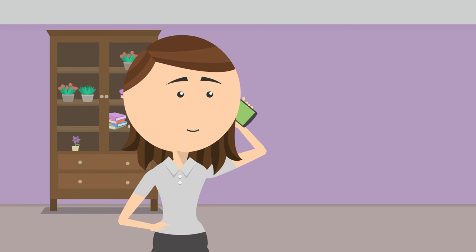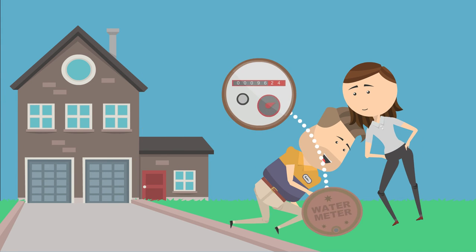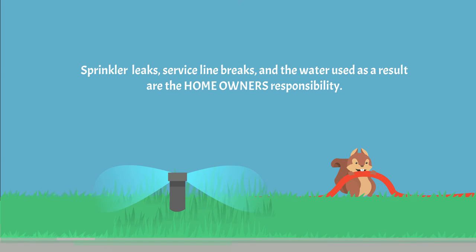If you're worried you might have a leak, call Customer Care at 913-895-1800. We'll help troubleshoot your problem and if necessary, send someone out to investigate further. Remember, sprinkler leaks, service line breaks, and the water used as a result are the homeowner's responsibility.